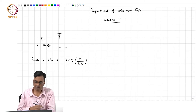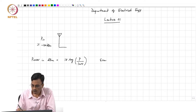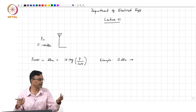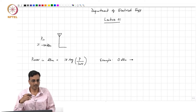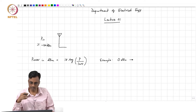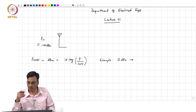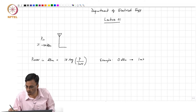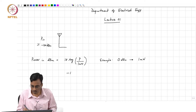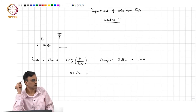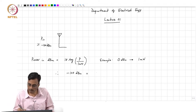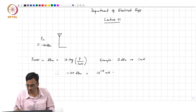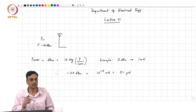For example, 0 dBm is 1 milliwatt of power. Let us figure out what minus 100 dBm is: 10 to the power minus 10 milliwatts, which is basically 0.1 picowatts of power.